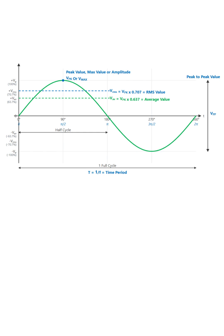First is the peak value, also called the max value or amplitude. This is the highest point the wave reaches, either in the positive or negative direction. It's labeled here as Vp or Vmax.